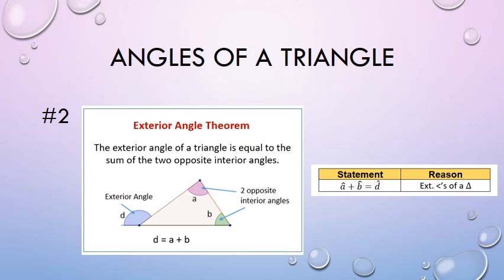Let's look at the next reason — the next special angles formed with a triangle. This is what we call the exterior angle of a triangle. In the previous slide we looked at interior angles; now we look at exterior angles. The line coming from D must be a straight line joined to the triangle. That exterior angle D is equal to the opposite interior angles — so A and B added together give you that exterior angle.